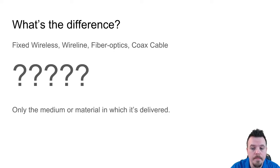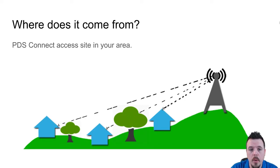So first thing is where does it come from? Well, we have towers and access sites all around Morgan County. We have currently about 30 different sites. There are some things that people don't understand and they call and they say, 'Well my neighbor can get it but I can't.' There's several access sites in the area - not every tower that you see is a PDS Connect tower.